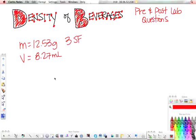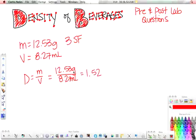And then number two asks us to actually calculate it. So we're calculating the density. Density is equal to mass over volume. Mass is equal to 12.53 grams, volume is equal to 8.27 milliliters. Plug that into your calculator and you get in three sig figs 1.52, and then our units are grams per milliliter.